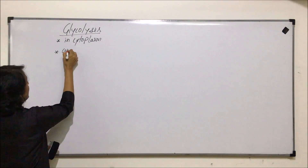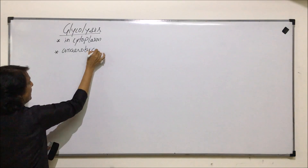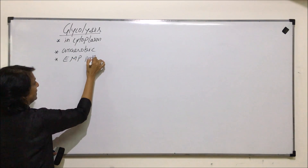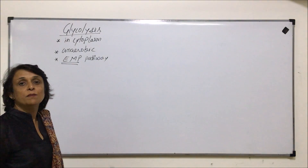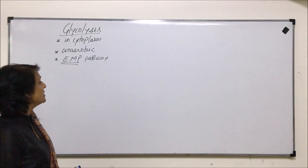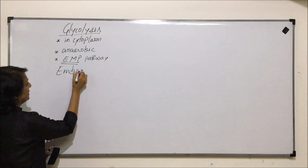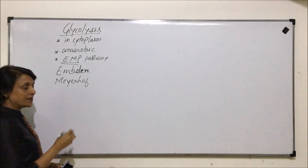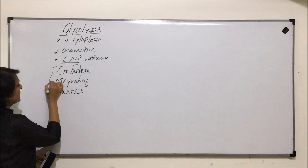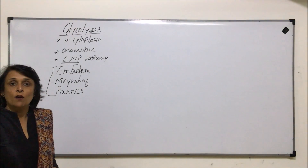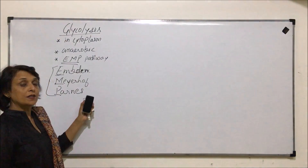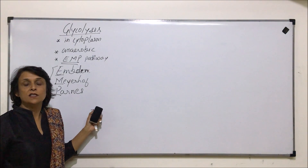Glycolysis is an anaerobic process and it is also known as the EMP pathway. EMP is named after three scientists — Embden, Meyerhoff, and Parnas — who proposed and gave the complete pathway of glycolysis. That is why EMP is the other name given to this pathway.